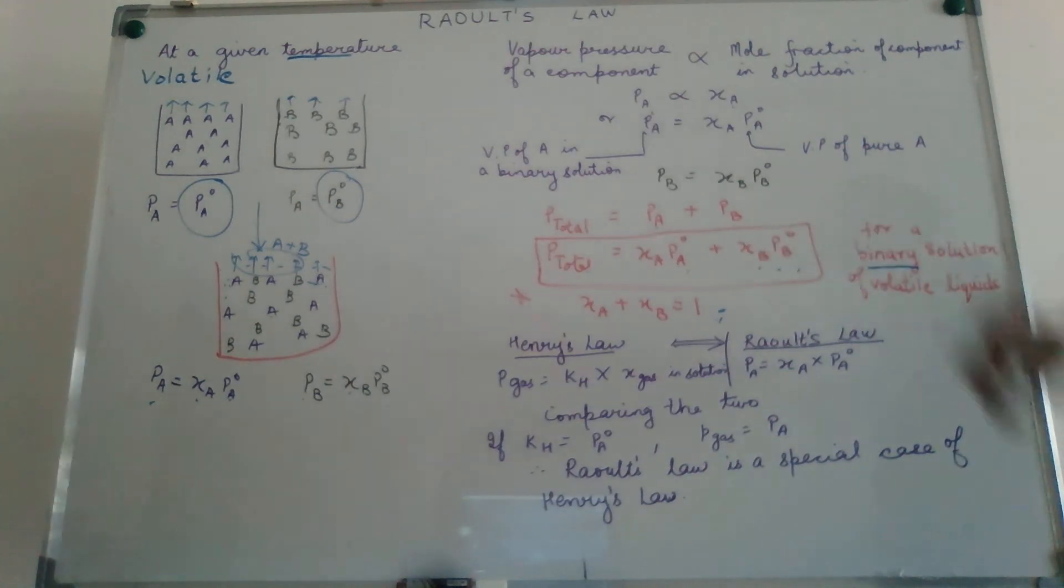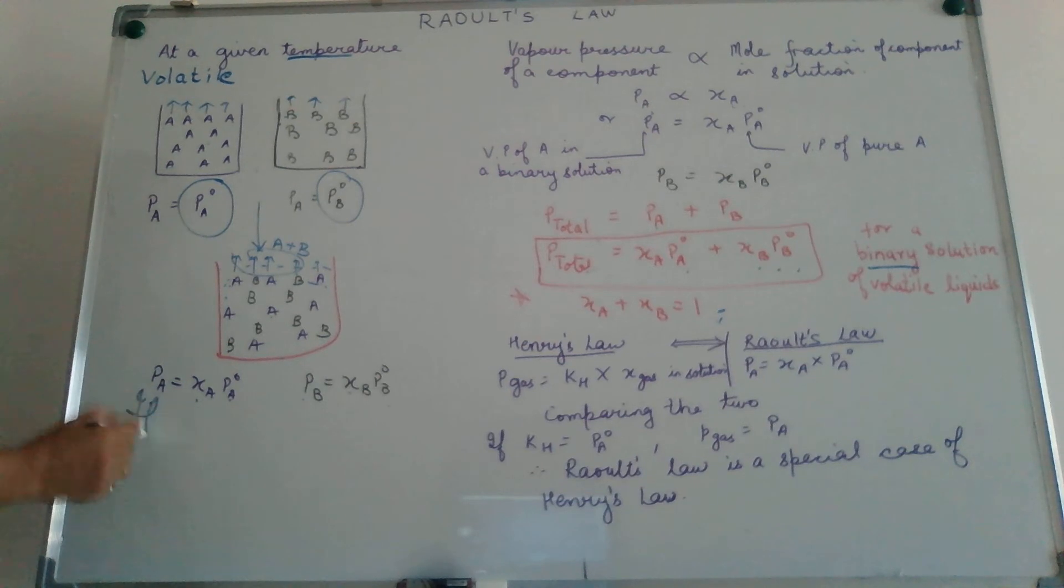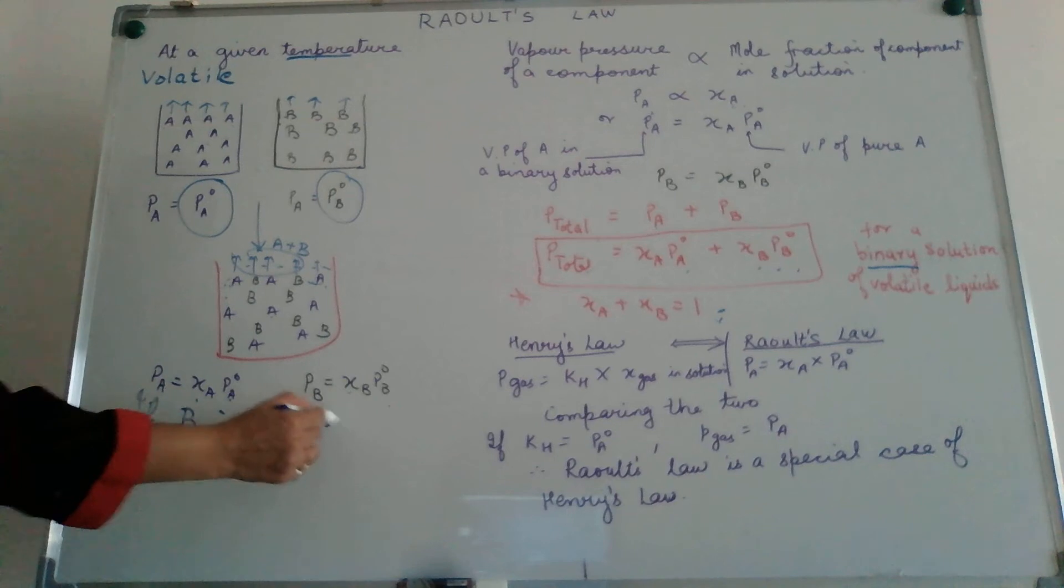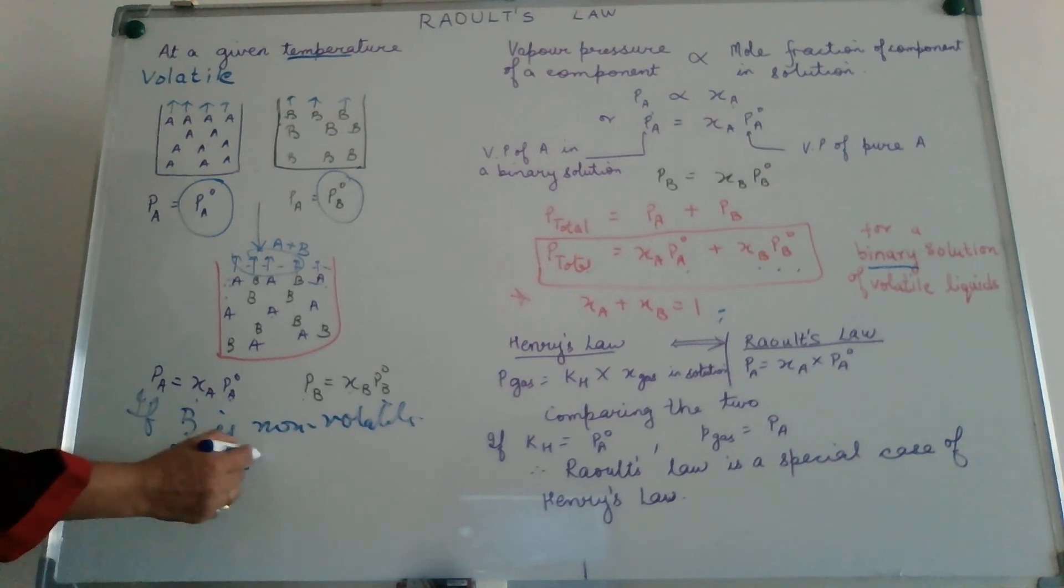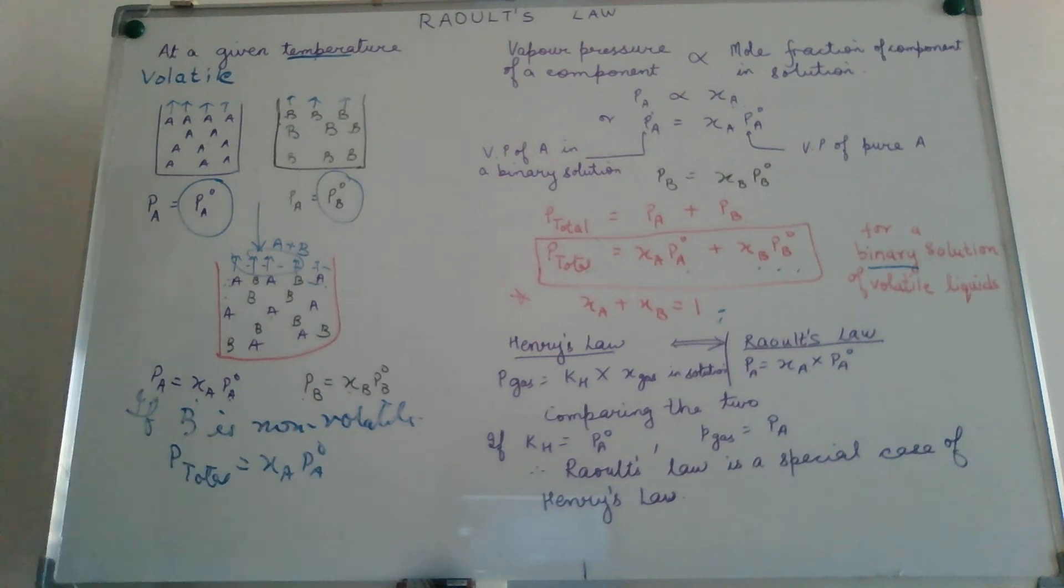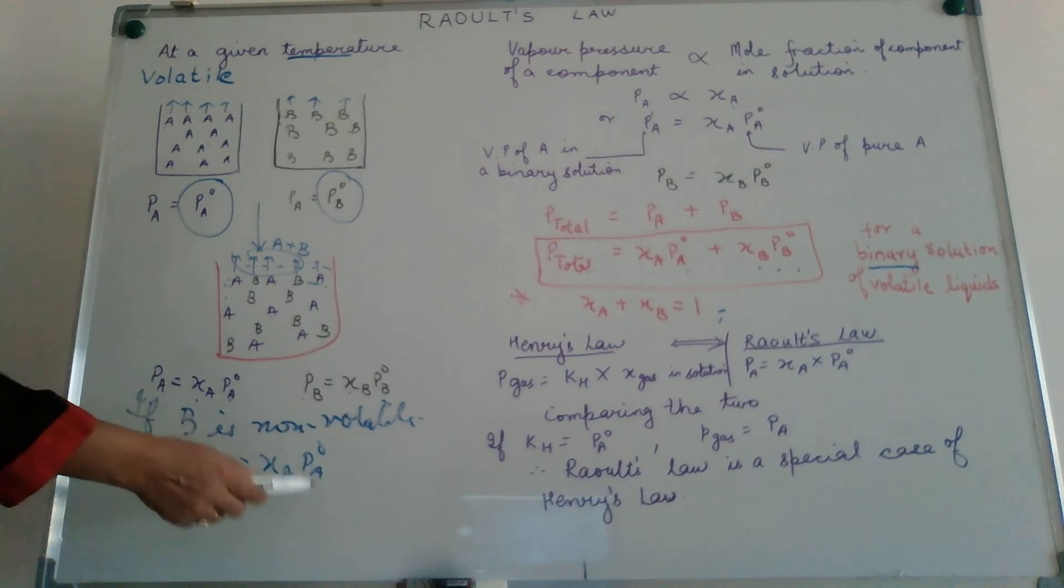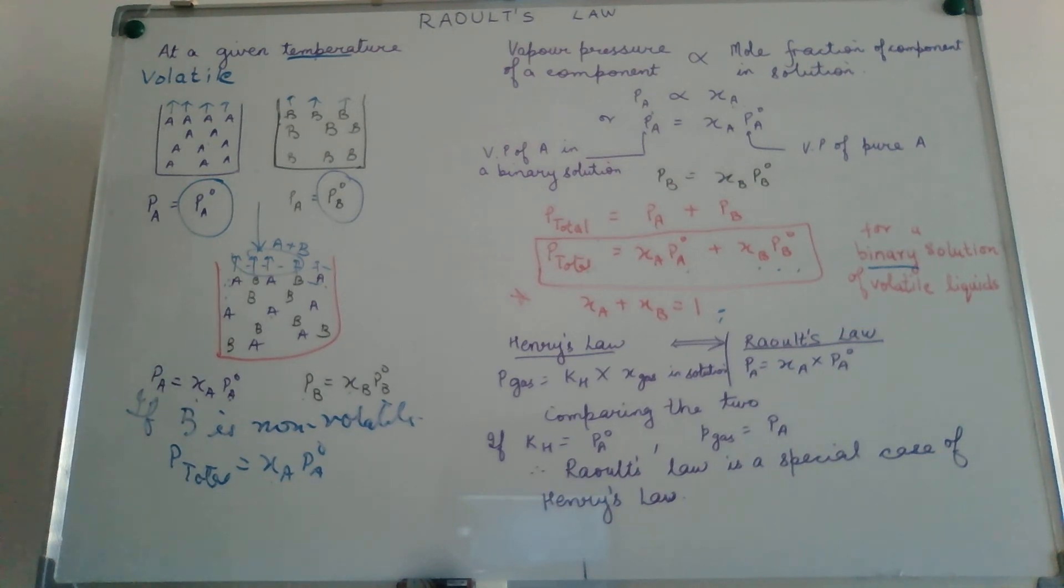Now what if one of them is non-volatile? Let us suppose if I say B is non-volatile. In other words, it does not change into the vapor state. Only the particles of A are there on the surface. In that case, the total vapor pressure of the solution will be only due to A but depending on its mole fraction. That means P total will be a fraction of PA0 and not just PA alone, because what we have over here is now on the surface, we have particles of A and B, but only particles of A are vaporizing and not of B. So we need to remember the condition.